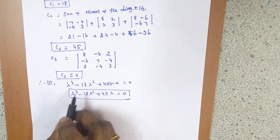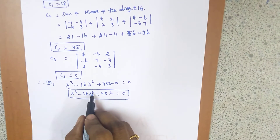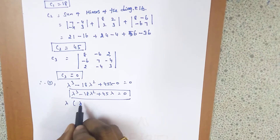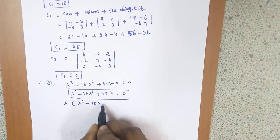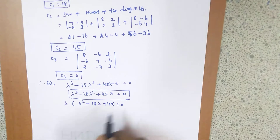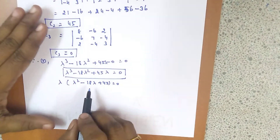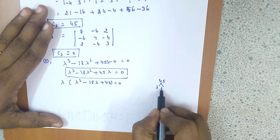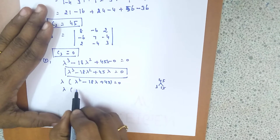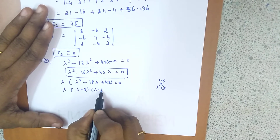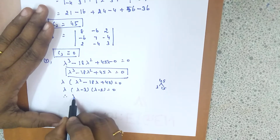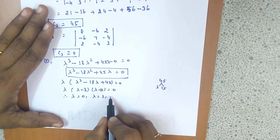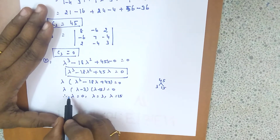The characteristic equation λ³ - 18λ² + 45λ = 0 has degree 3. Since all terms contain λ, we factor out λ: λ(λ² - 18λ + 45) = 0. The quadratic factorizes as (λ - 3)(λ - 15), so λ(λ - 3)(λ - 15) = 0. Therefore the roots are λ = 0, λ = 3, and λ = 15. These are the eigenvalues.